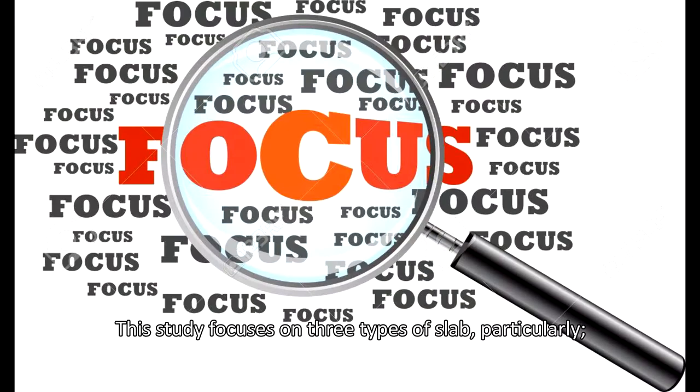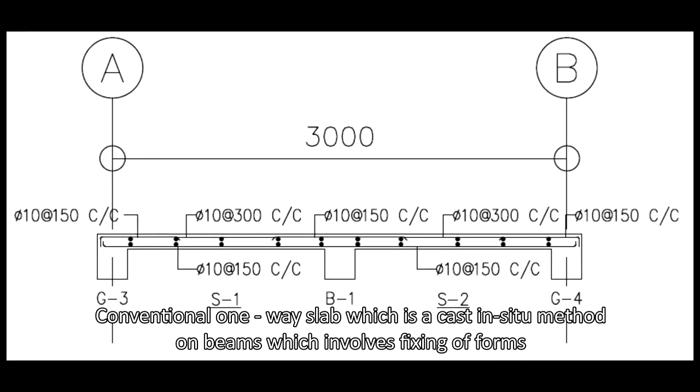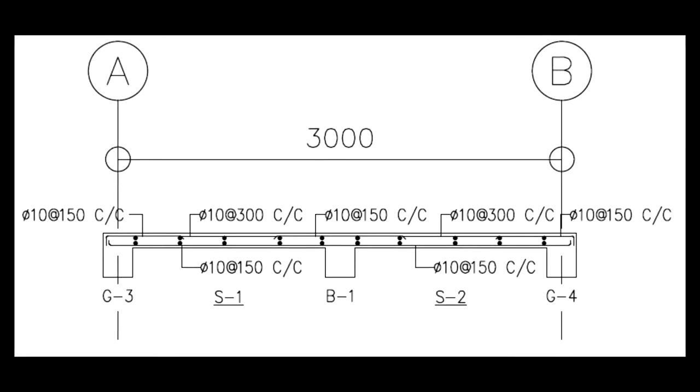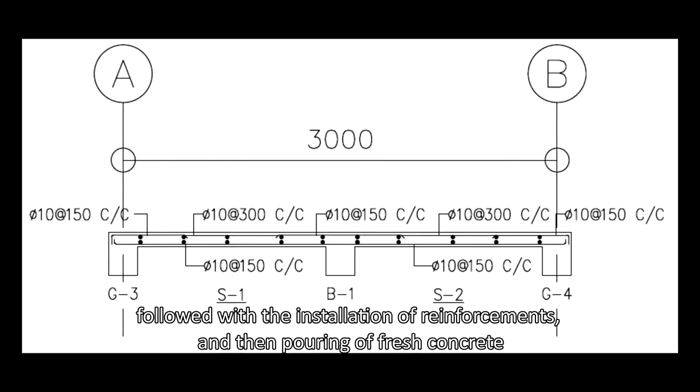This study focuses on three types of slab, particularly conventional one-way slab, which is a cast-in-situ method on beams which involves fixing of forms followed with the installation of reinforcements and then pouring of fresh concrete.